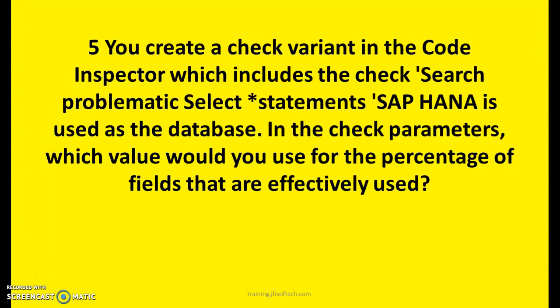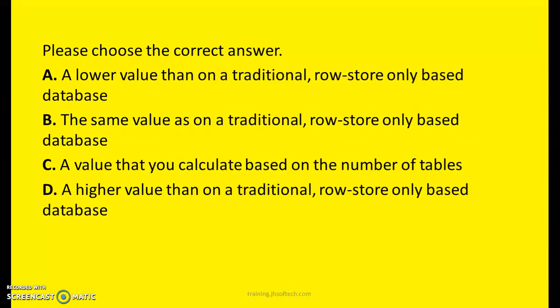Question Five: You create a check variant in the Code Inspector which includes the check for problematic SELECT * statements, and SAP HANA is used as the database. In the check parameters, which value would you use for the percentage of fields that are effectively used? A: A lower value than a traditional row store-only based database. B: The same value as on a traditional row store-only based database. C: A value that you calculate based on the number of tables. D: A higher value than a traditional row store-only based database.